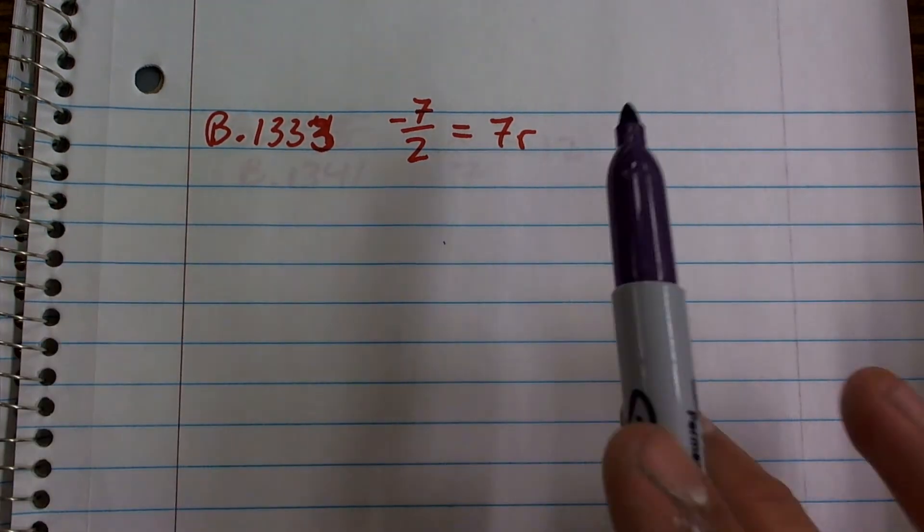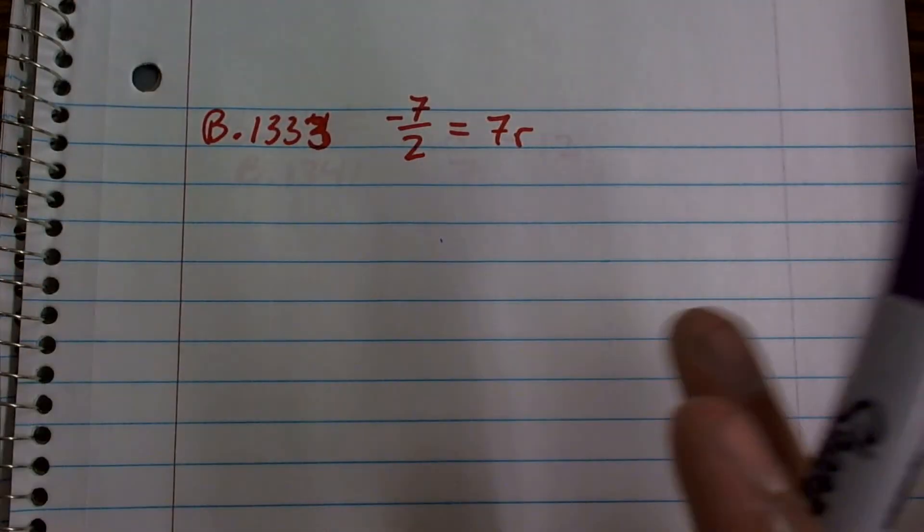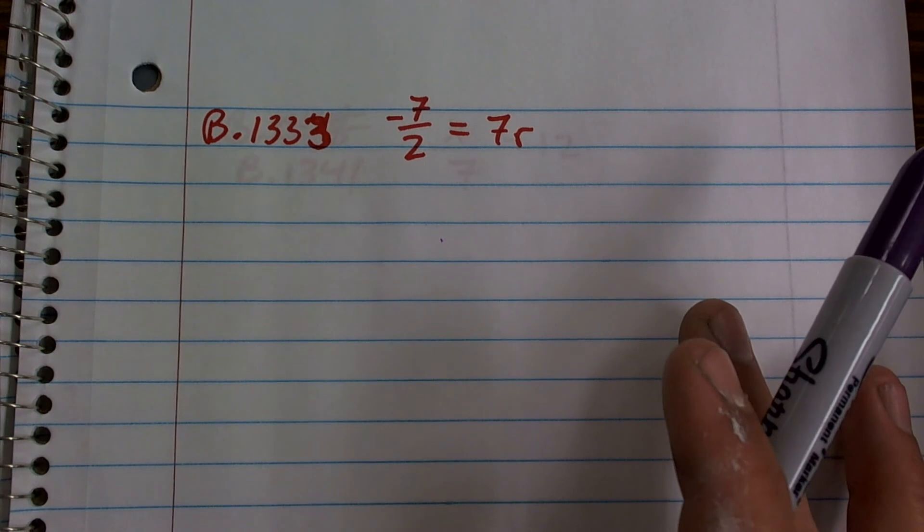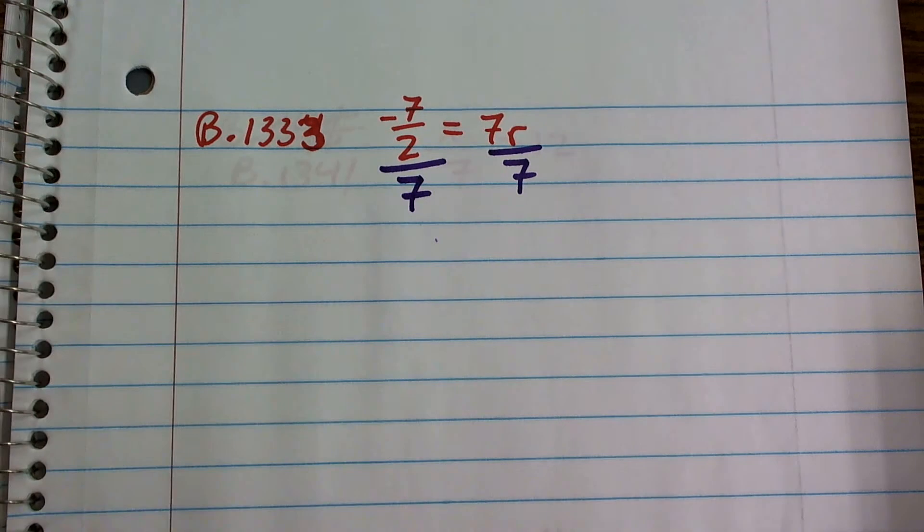So what is happening to r? It's being multiplied by 7. Plain and simple, it's being multiplied by 7. So the inverse operation of multiplication is to divide.